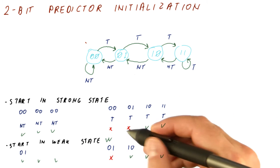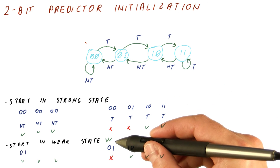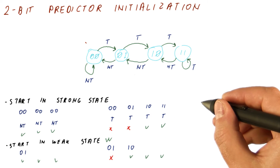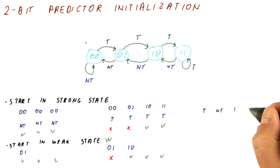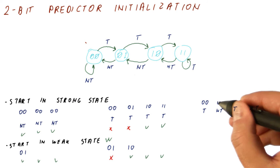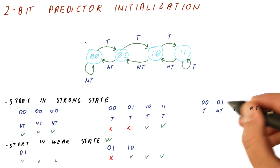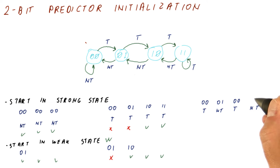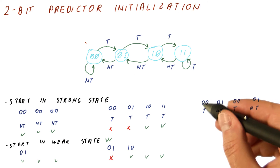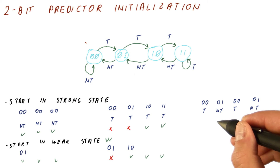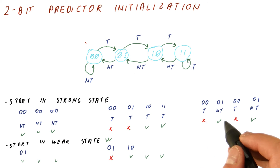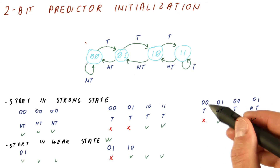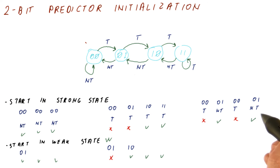This argument means that probably we should be starting in the weak state. However, there is a flip side to it. Let's say that the branch is taken, not taken, taken, not taken, and we start in the strong state. The branch is taken, so we move to the weak state. Then it's not taken, so we move back to the strong state, and so on. We mispredict here, but we correctly predicted here and here. So half the time we have mispredictions. If we started in the one-one state, we would have a similar behavior — we would mispredict every other time.